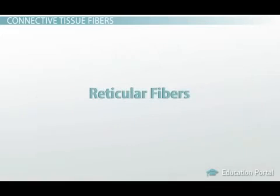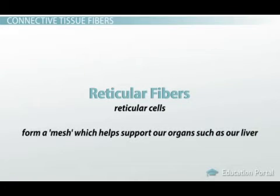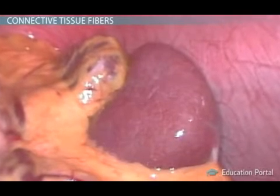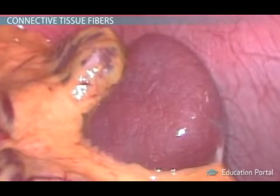Reticular fibers are made by specialized cells called reticular cells, which secrete materials that make a very thin fiber. These fibers form a mesh which helps support our organs such as our liver. These fibers also form an organ on their own — reticular connective tissue is what makes up our spleen.